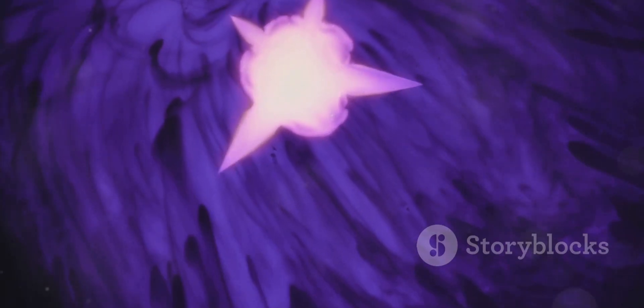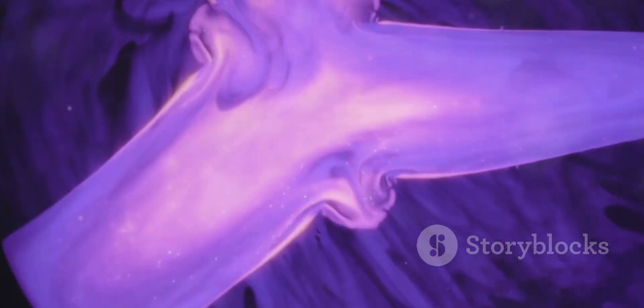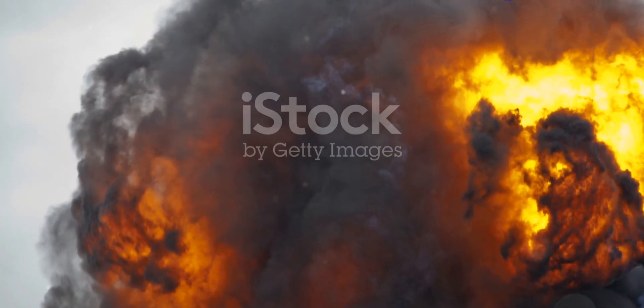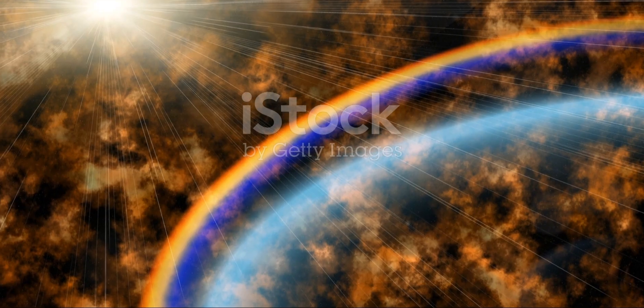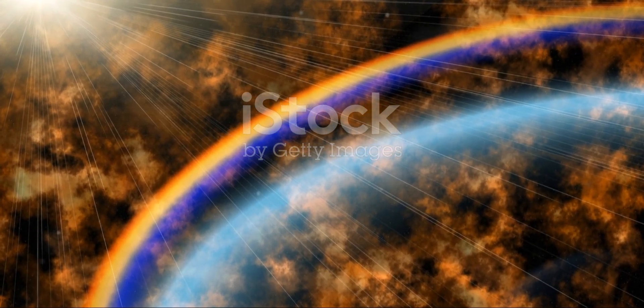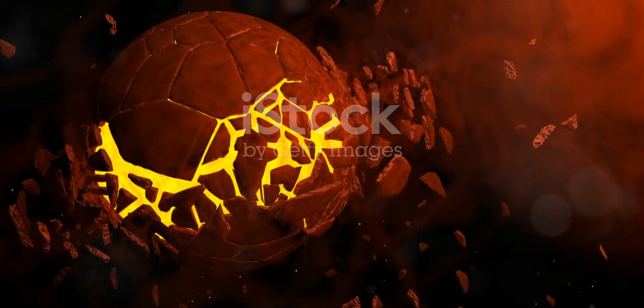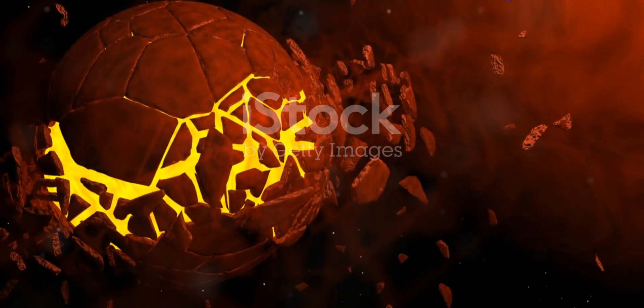The core can no longer support the weight of the outer layers of the star. As a result, the core collapses in on itself. This collapse happens in a fraction of a second. It triggers a shockwave that rips through the star. The shockwave blasts the star's outer layers into space. This is what we observe as a Core Collapse Supernova.